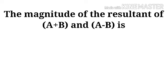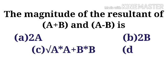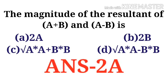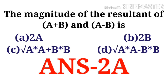The magnitude of the resultant of (A plus B) and (A minus B). The options are: Option A, 2A; Option B, 2B; Option C, root of (A·A plus B·B); Option D, root of (A·A minus B·B). The correct option is 2A.